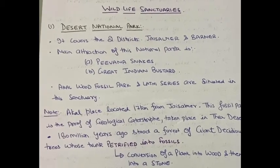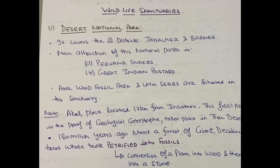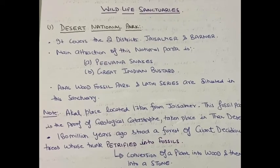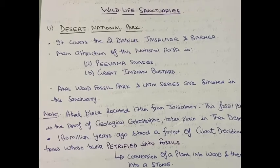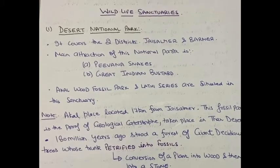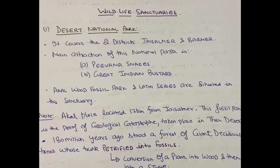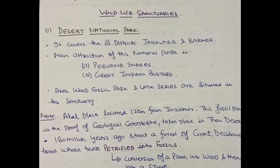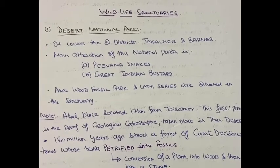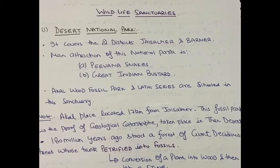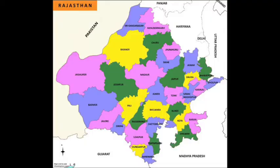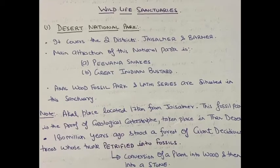Now in this lecture we are going to discuss the Desert National Park. First of all, it is important to understand its location. It is located in two districts: Jaisalmer and Barmer, both in western Rajasthan. Barmer is on the top of the district of Jaisalmer, so they are touching, adjacent districts to the Desert National Park.